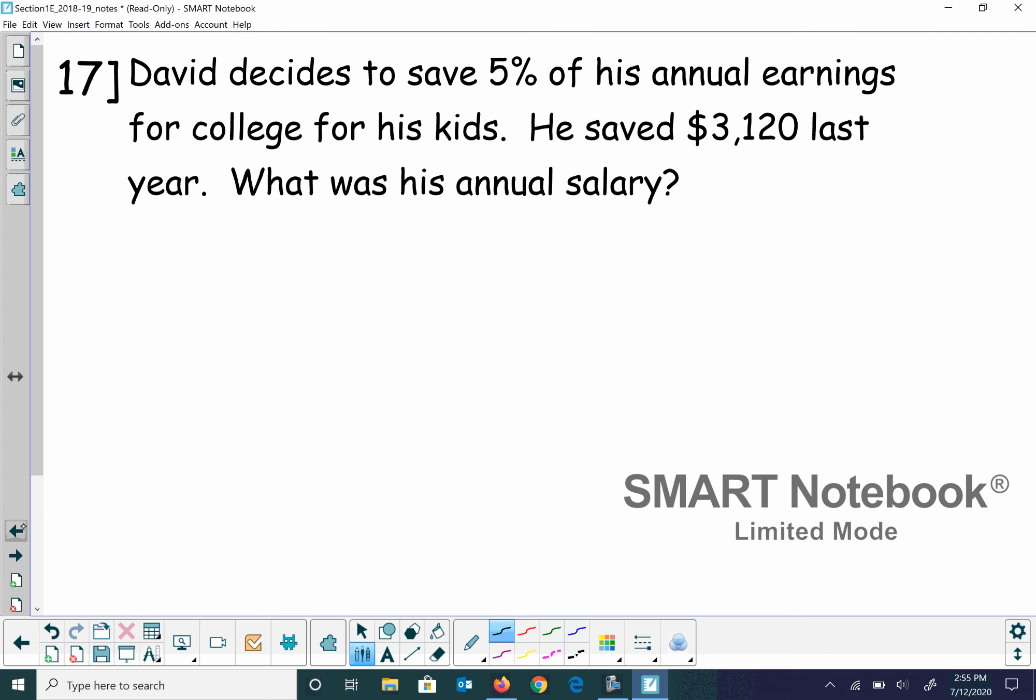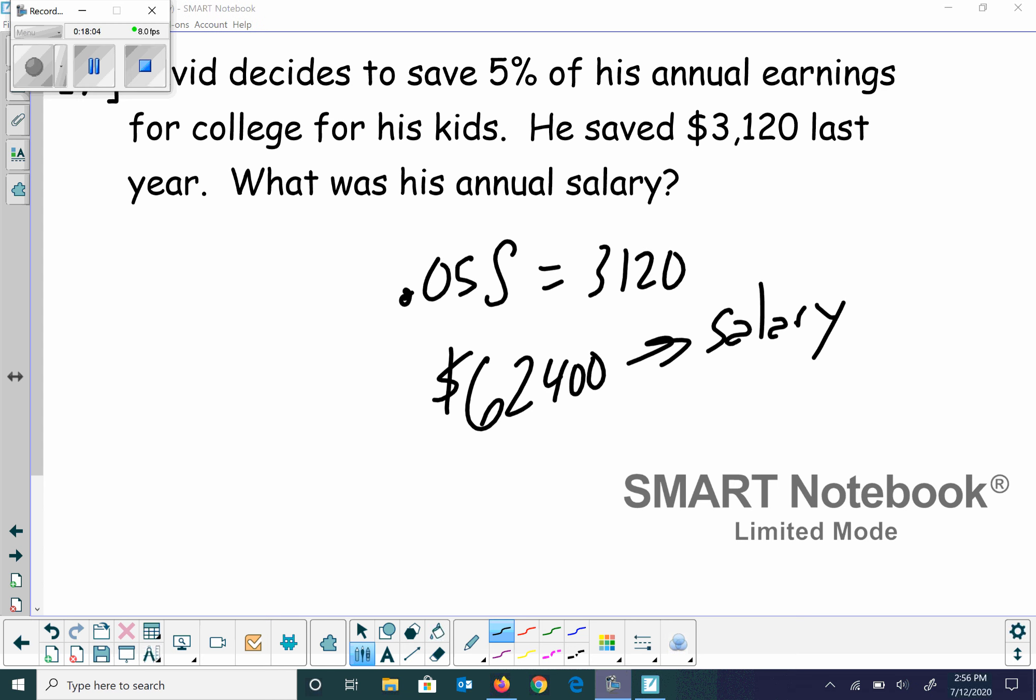I think this is the last problem. Yep. It sure is. Okay. David decides to save 5% of his annual savings for college for his kids. He saved $3,120 last year. What was his annual salary? Okay. So he's going to save 5% of his salary. And that wound up being that much money. And so I actually need a calculator to do this. So I'm going to go 3,120 divided by .05. Looks like he made $62,400 was his salary. Okay. Make sure you write down any questions. We'll have time to go over those in class. We will also have a quiz in class basically over this stuff. So if you have questions based on this, you want me to answer them more for you, I'm happy to do that. Have a great day, everybody. Take care of one another. Bye-bye.